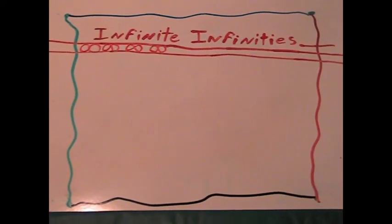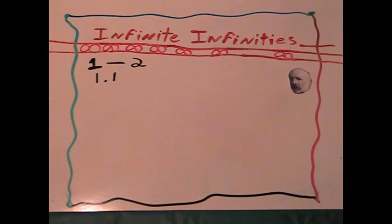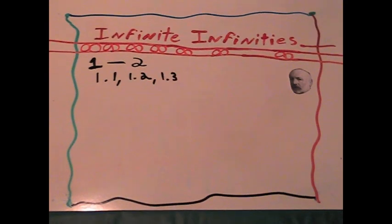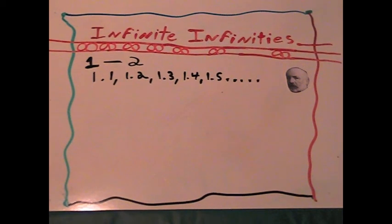Infinite infinities. To better understand Cantor's theory, let's list the possible numbers between 1 and 2. You have 1.1, 1.2, 1.3, 1.4, 1.5, and so on.